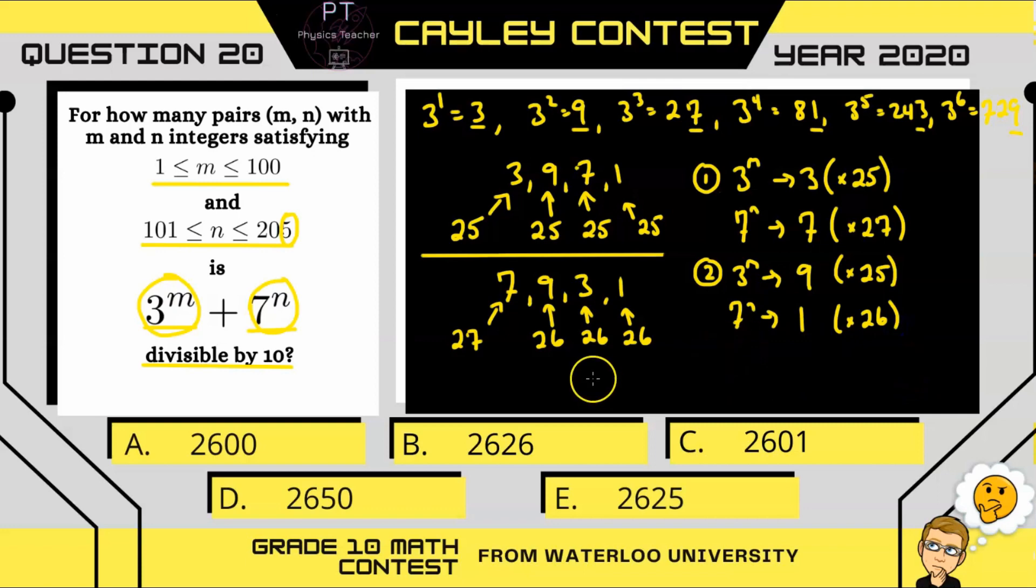Okay, we're going to continue. There's two more options. The third one is if 3 to the m gives us 7, and 7 to the n has our ones digit as a 3. Again, we have 25 options for the m and 26 options for the n. And our last possible option is if we have 3 to the m having a ones digit of 1 and 7 to the n having a ones digit of 9.